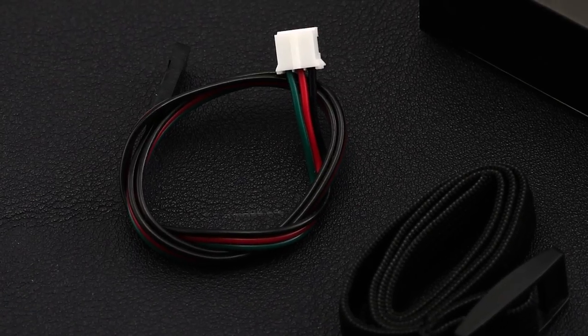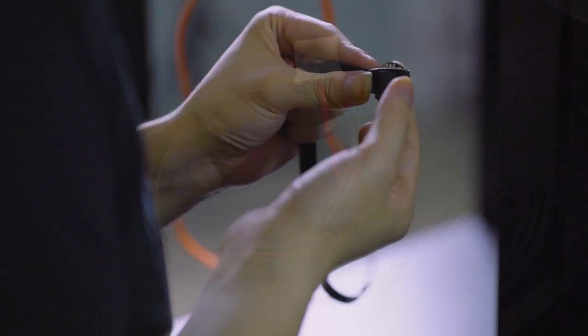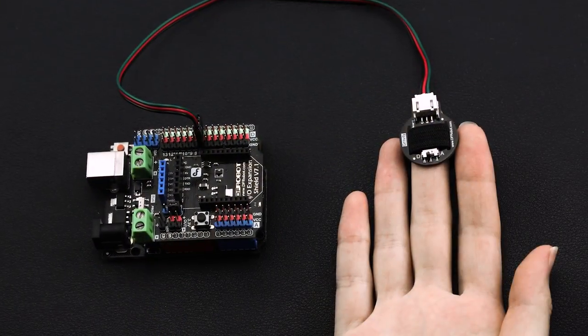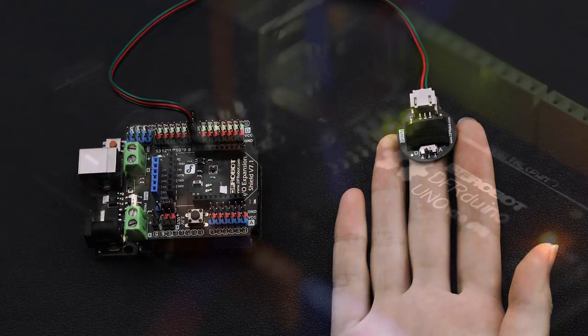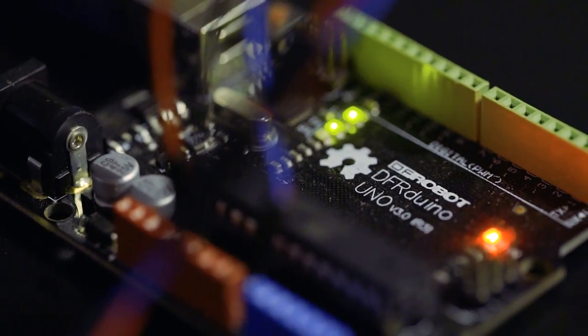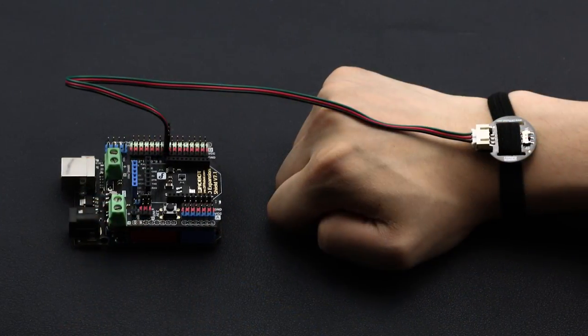It comes with a wristband and a three-pin jumper cable. To start, just attach the sensor to your body and hook it up with an Arduino board. Before moving into setup, let's first take a look at the optical heart rate sensor and how it works.